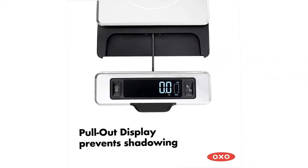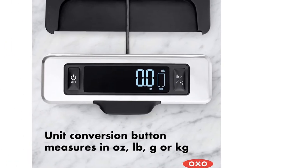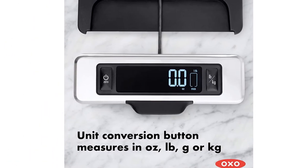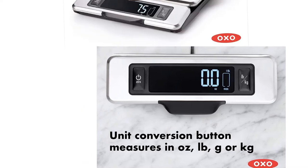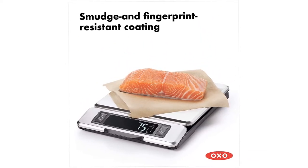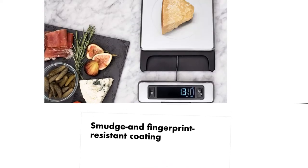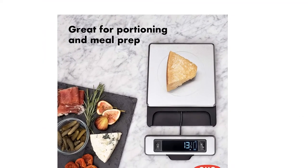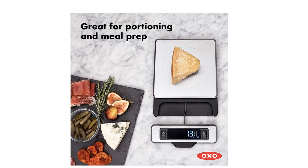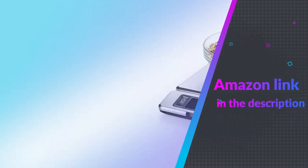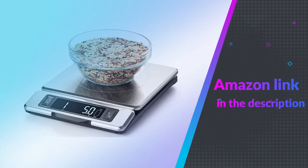The OXO Good Grips food scale with pull-out display is ideal for weighing ingredients. The easy-to-read digital display features large numbers and measures in 1/8-ounce US and 1-gram, metric, increments for exceptional accuracy. If you like this product please check out the Amazon link in the description below.